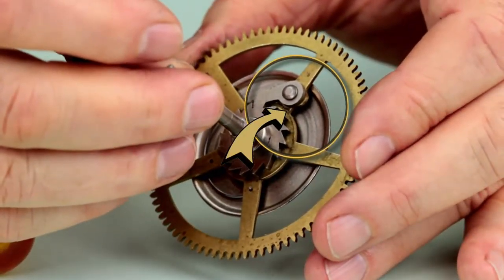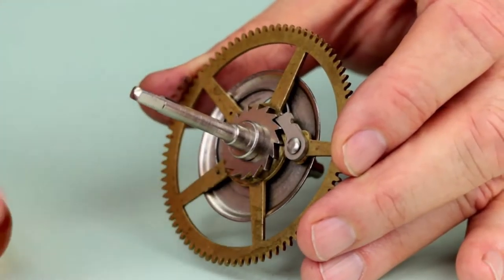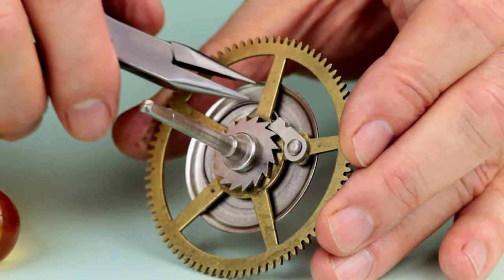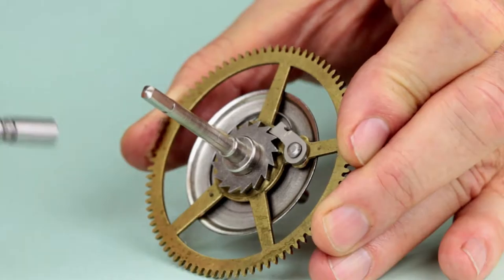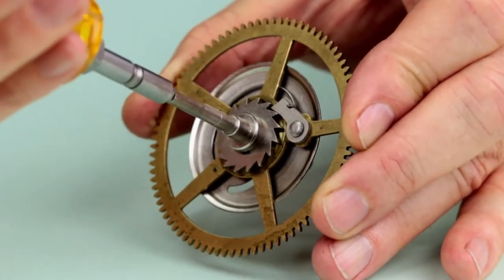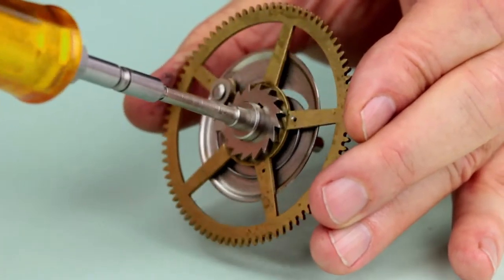The click is riveted to the great wheel so that it will engage the ratchet wheel. The click is forced into the teeth of the ratchet wheel by the click spring. Since the ratchet wheel is forced to turn with the arbor when the click is engaged in the ratchet wheel, the click forces the great wheel to turn with it, transferring power from the mainspring to the wheel train.